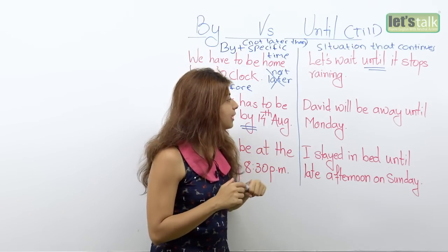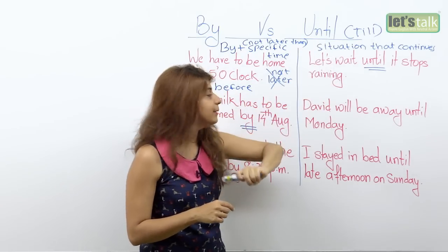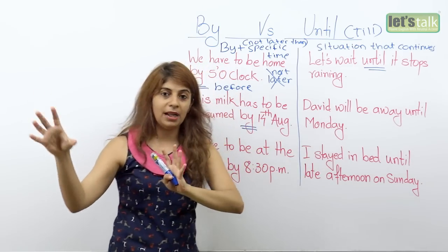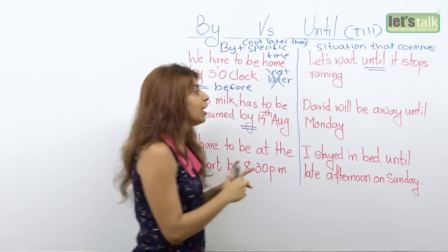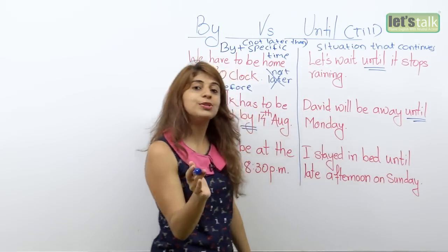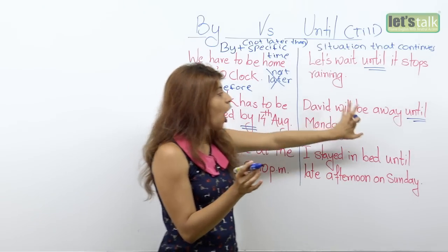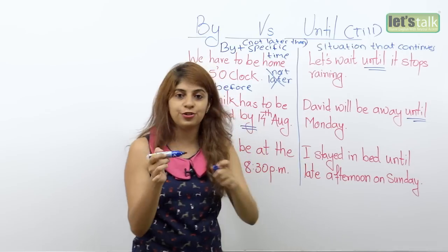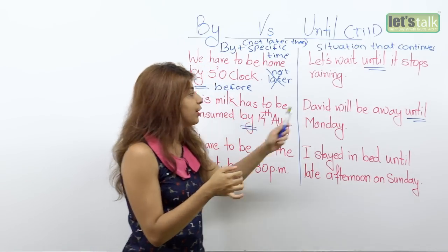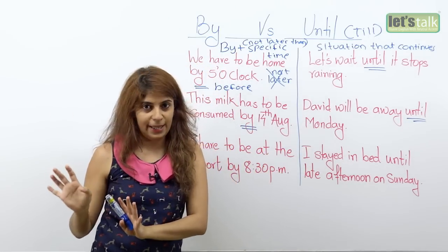Another example for 'until': 'David will be away until Monday.' Here you use 'until' — or you can also use 'till' — to talk about the duration of his trip. So he will be away until Monday.